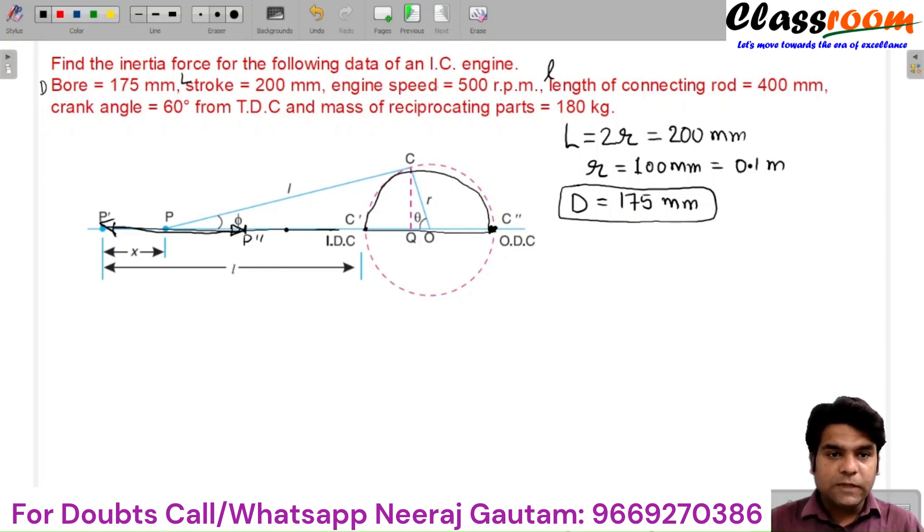Now, engine speed is N equals to 500 rpm. You can easily convert this rpm in radian per second. Omega equals to 2 pi N by 60. So if I substitute the value of N here, I will get value of omega as 52.4 radians per second.